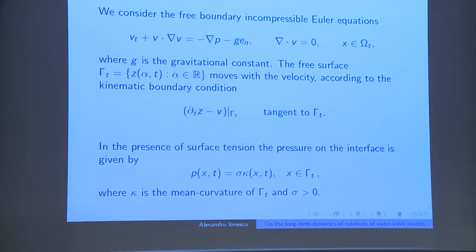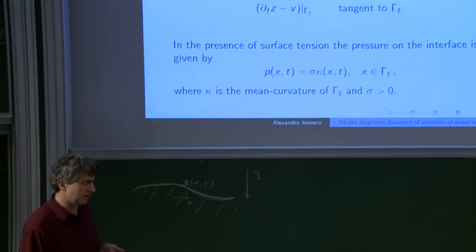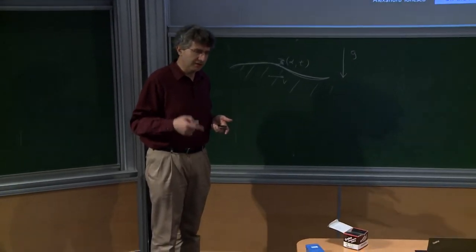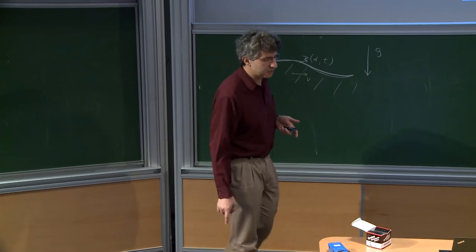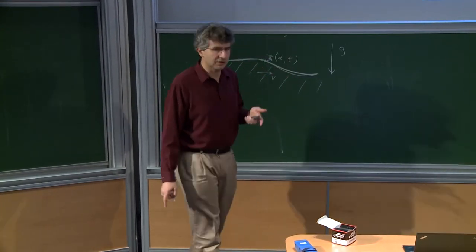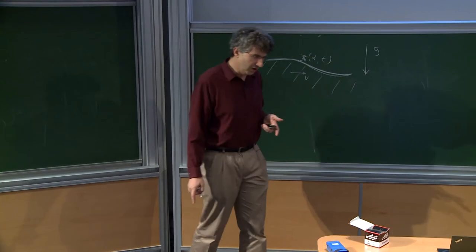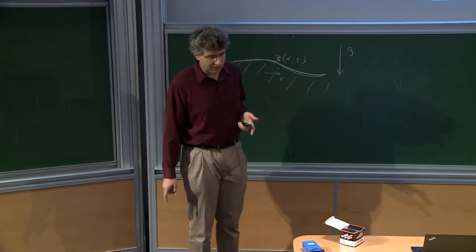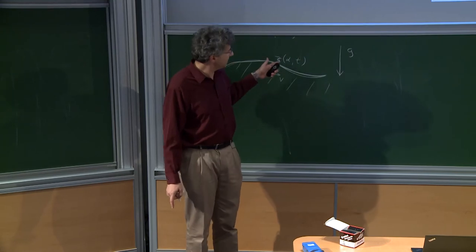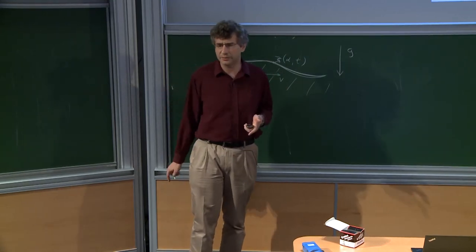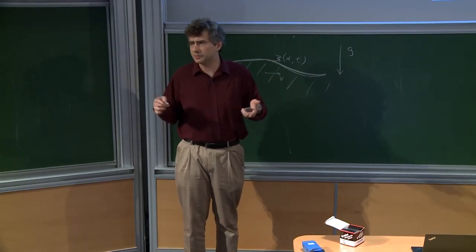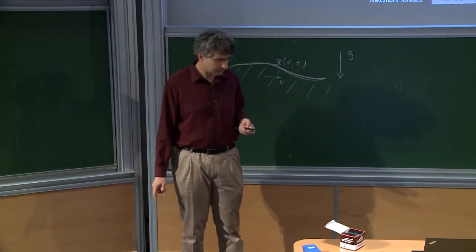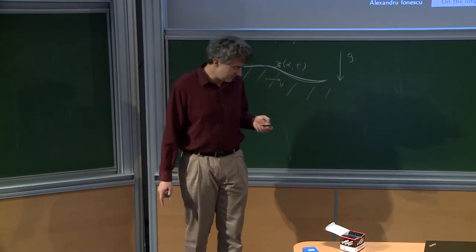Once we have the pressure, velocity, and interface at one time, we get the infinitesimal increments: from the Euler equation we get V_t, the increment. There is a slight imprecision in the equation for Z, because it has to do with how you parametrize the surface — there are many ways to parametrize the same surface.